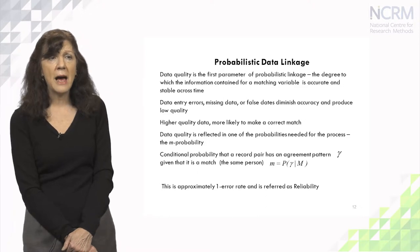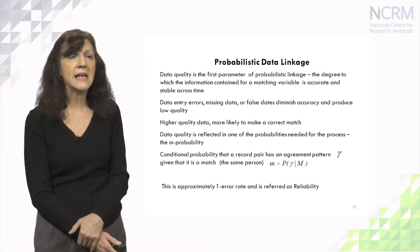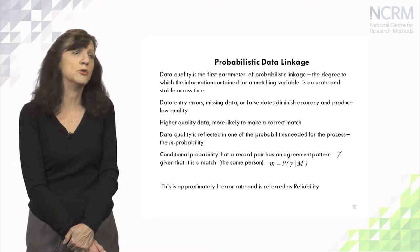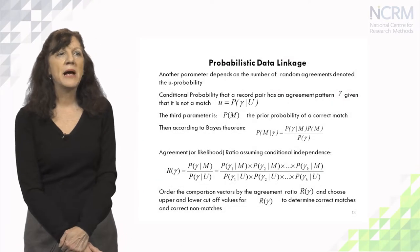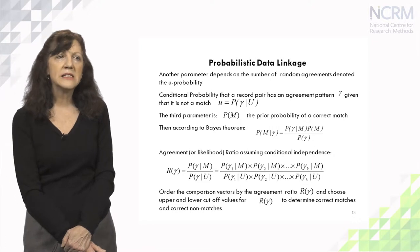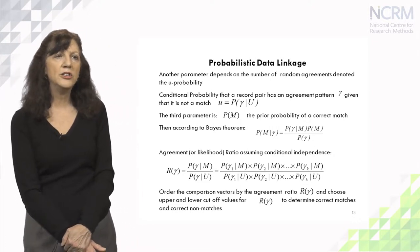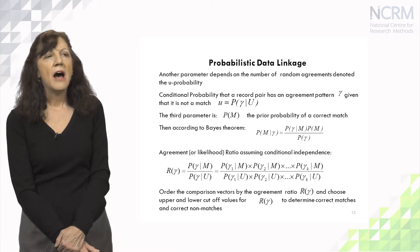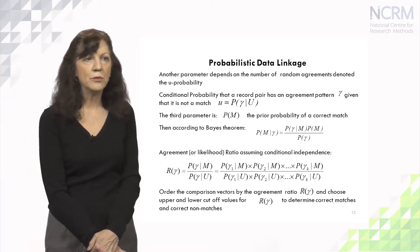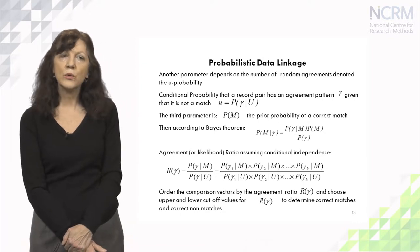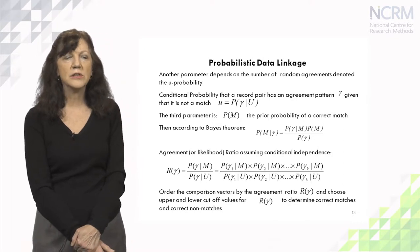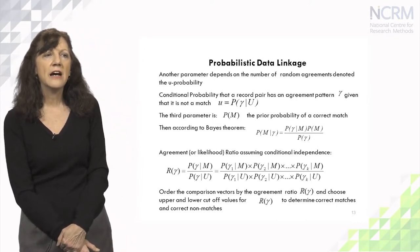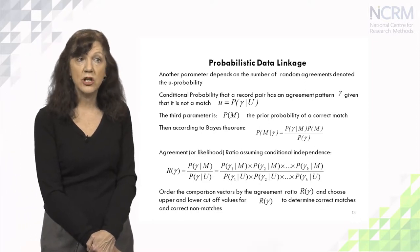The second parameter depends on the number of random agreements, denoted in the Fellegi-Sunter framework as the U probability. The U probability is the conditional probability that a record pair has an agreement pattern gamma given that it is not a match. The third parameter is the overall number of potential matches in our data sets, denoted as the probability of match.